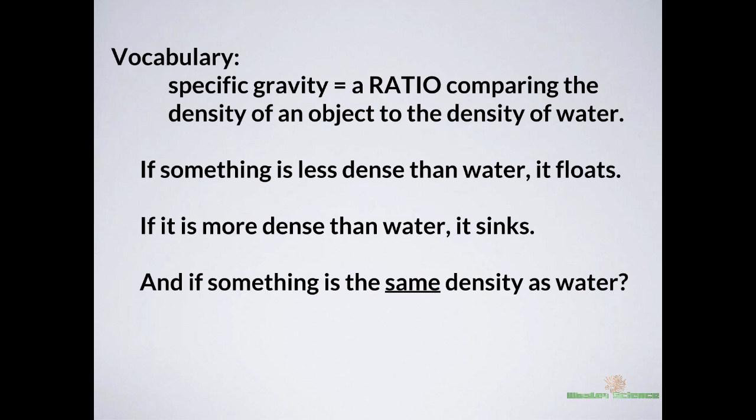We call this concept of comparing an object to the density of water specific gravity. It's basically just a ratio — mass over volume. If something is less dense than water, it will float; if more dense, it will sink; and if the same density, it will flow with the water. Our density is very close to one, so we can actually change our buoyancy by the amount of air in our lungs. If you constantly breathe out in water, you will start to sink. When you fill your lungs with lots of air, it's easier to float.